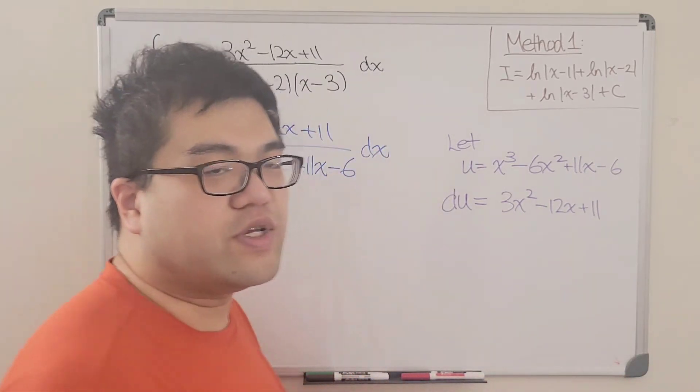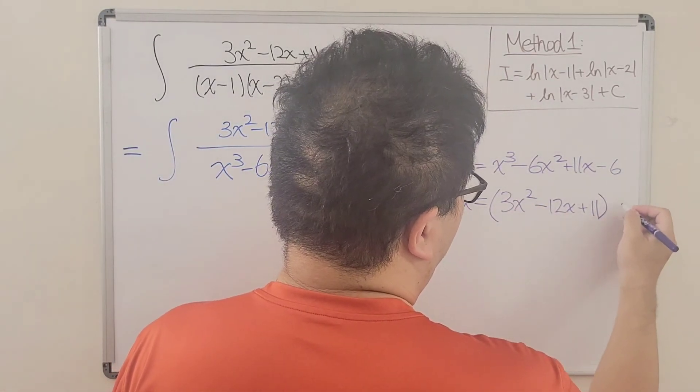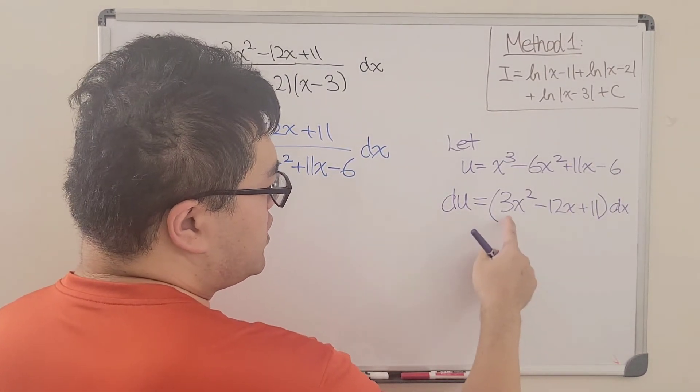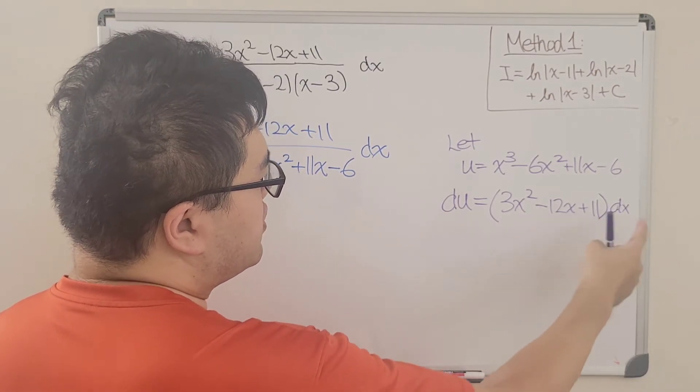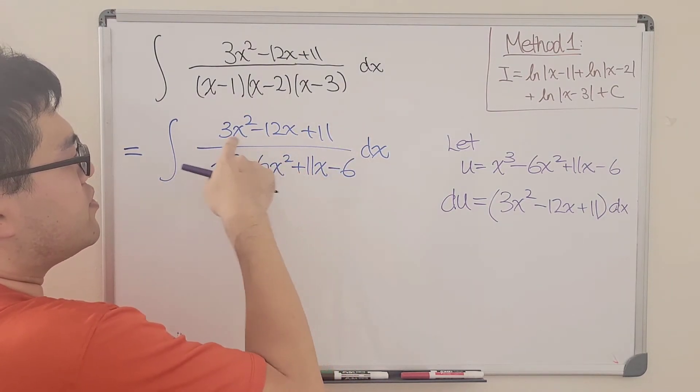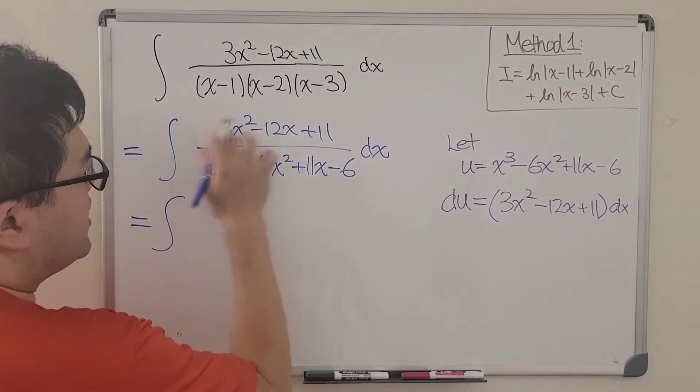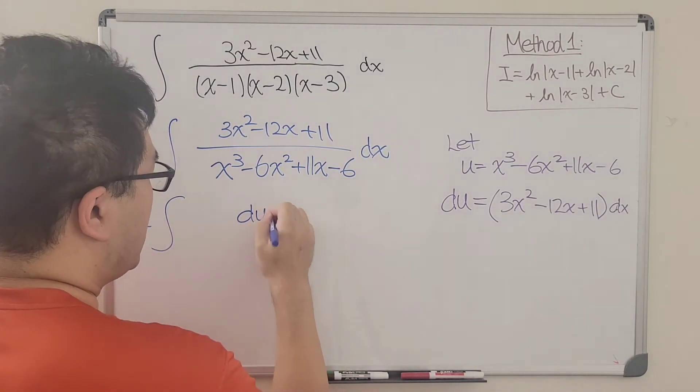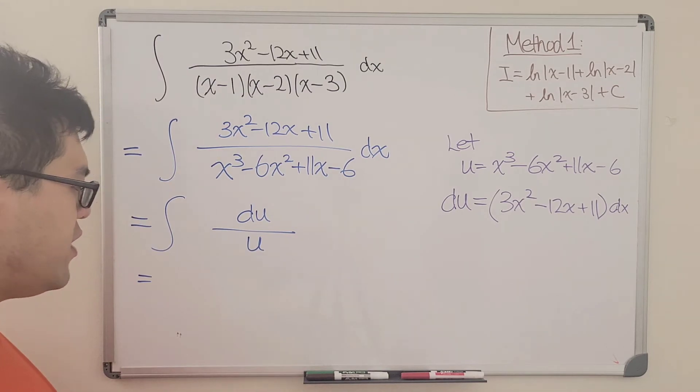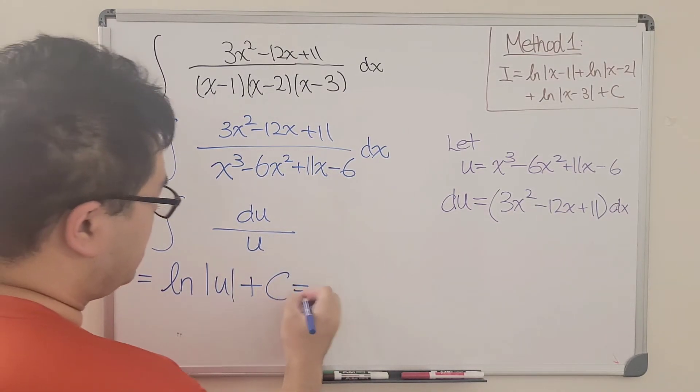Then if we take the derivative on both sides, we get du equals 3x squared, which is from the x cubed minus the derivative of 6x squared, which is 12x plus the derivative of 11x, which is 11 minus the constant term. And the derivative of a constant is, of course, obviously 0, no matter which variable we're taking with respect to. And don't forget, we need to put the dx at the end. Okay. So let's see. On the right hand side, we have 3x squared minus 12x plus 11 with respect to dx. Do we have it here? We do. We actually have it in the numerator. And it is actually in the exact same form.